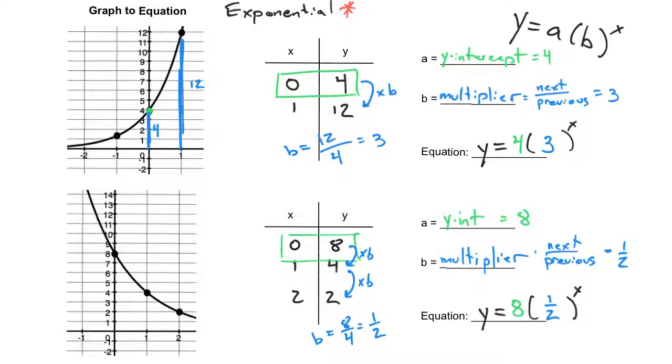a is your 0 value in x, your y-intercept or initial value. There's several phrases we use to represent that, and b is your multiplier. I cannot reiterate enough the fact that this is not a line, so I don't do change in y over change in x. You do next over previous in order to find out what that multiplier is. Thank you.